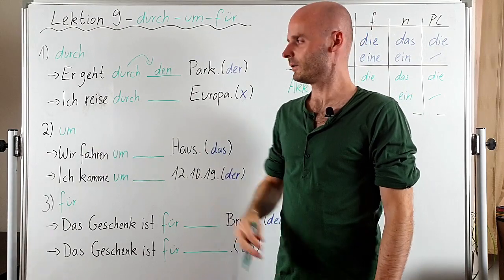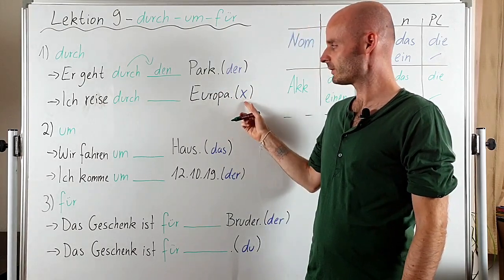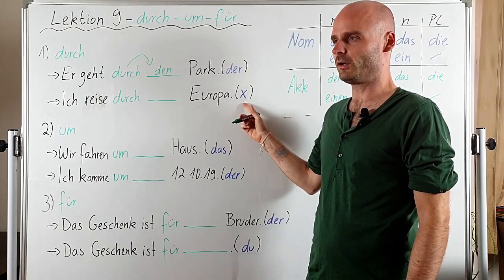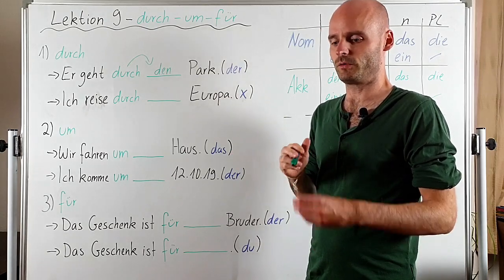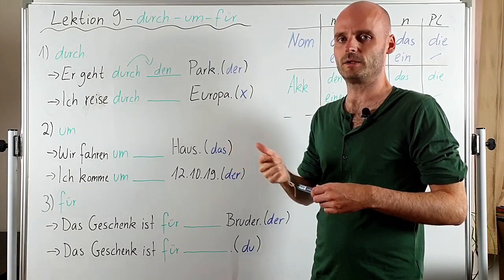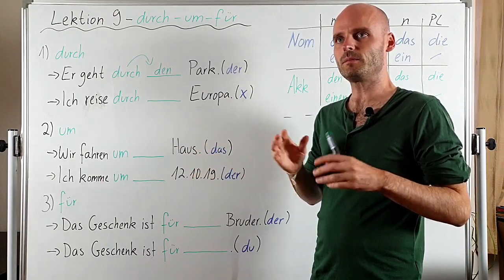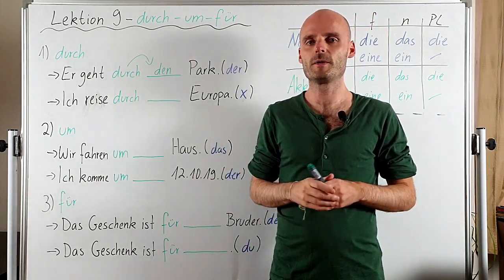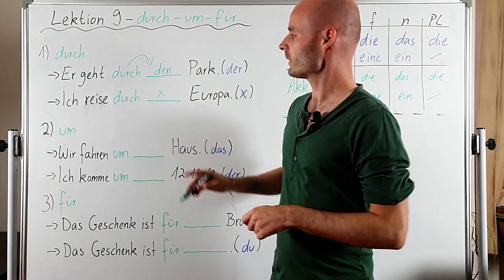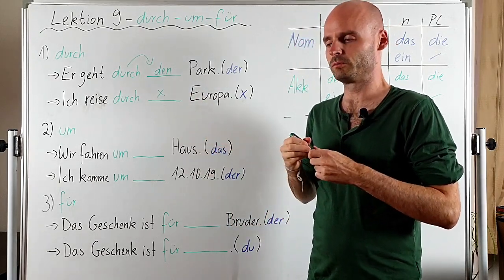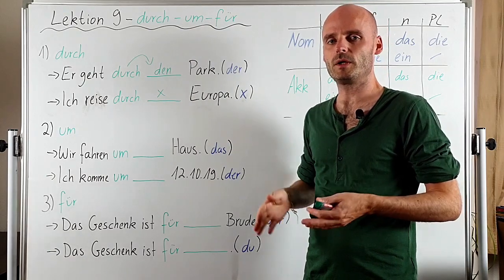As you can see, Europa — just like all continents and most countries and cities — doesn't have an article. There are some exceptions: for example, Switzerland has an article — 'die Schweiz,' 'die USA,' 'der Irak,' 'der Iran,' 'der Kongo,' 'die Türkei.' But most countries don't have an article. So if a noun like Europa doesn't have an article, we also don't use one in accusative: 'Ich reise durch Europa.'